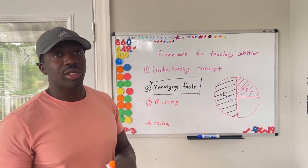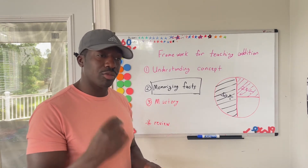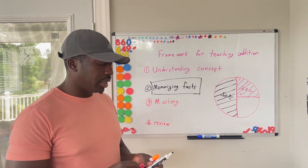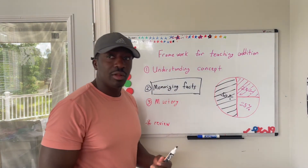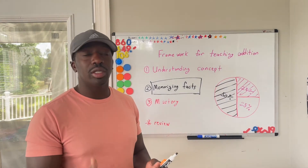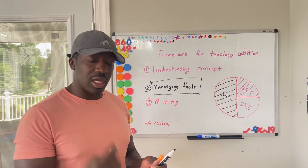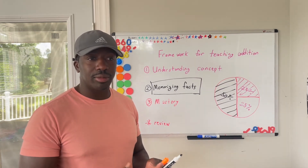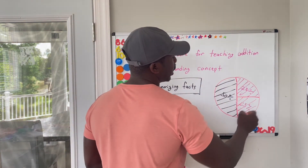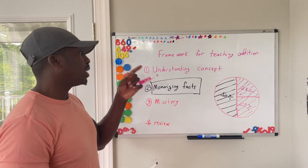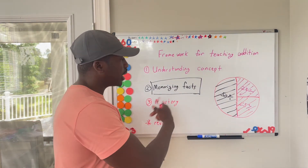Once they understand their math facts, the third thing is mastery. Mastery is how quickly a child can recall these facts with very little effort, and once again that's about 25%. So even if a child knows the math facts, if every time they are recalling them or using them they have to sit there and think — even if they get the final answer because they've memorized it — if they can't recall it quickly, then that becomes a problem. For all of my kids, I generally do regular assessments for all of the operations. At this point, most of them understand the concept and most of them have the memorization of the facts down. Then what we work on is mastery.